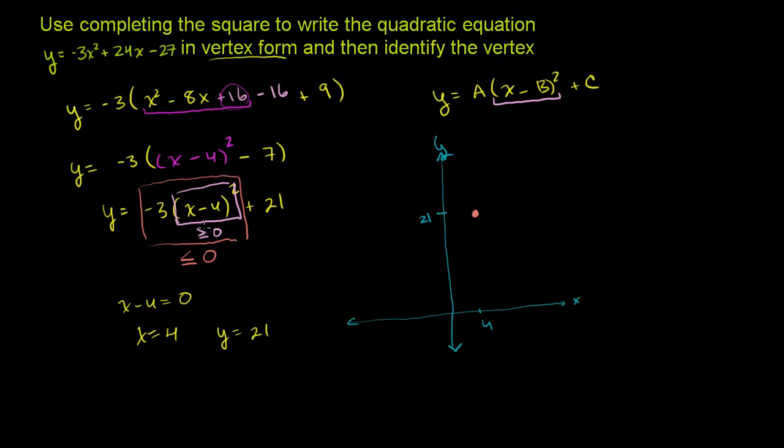It can only go down from there. Because if you shift the x around 4, then this expression right here will become non-zero. When you square it, it'll become positive. When you multiply it by negative 3, it'll become negative. So you're going to take a negative number plus 21. It'll be less than 21. So your parabola is going to look like this.